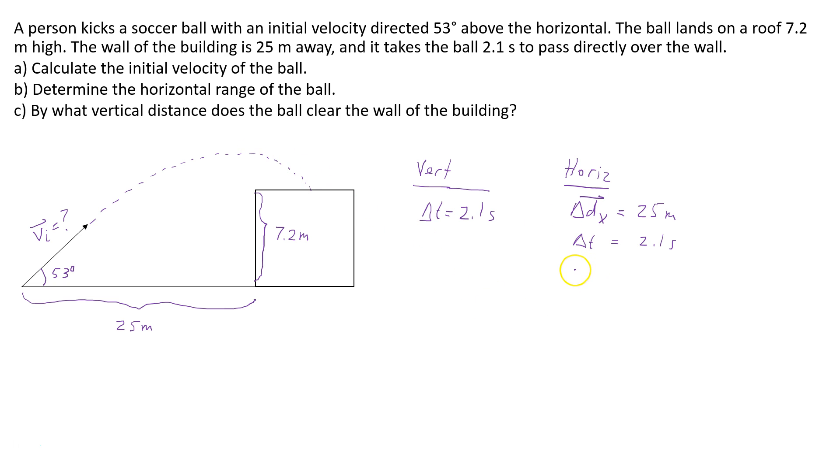And what we can find is the horizontal velocity of the ball. We know the displacement, the horizontal displacement. We know the time that it takes for the ball to travel 25 meters horizontally. So we can use these values to calculate the horizontal velocity.